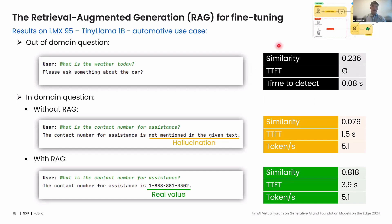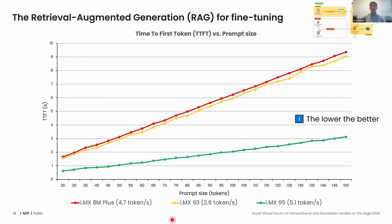That's a choice of implementation — we could have made many others. But when a question is within our domain, we can see the utility of RAG. For a specific question like 'what is the contact number for assistance,' without RAG we get a hallucination, giving the user wrong information, while using RAG we get the real value. This has a cost because we have more context tokens to pre-process, visible in the time to first token. We compared the impact of prompt size on time to first token across our three platforms, getting linear curves — encouraging results — with the best result on our latest platform, the i.MX95. Token generation speed is between 2.6 and 5.1 tokens per second, which respects human reading and speaking speed.